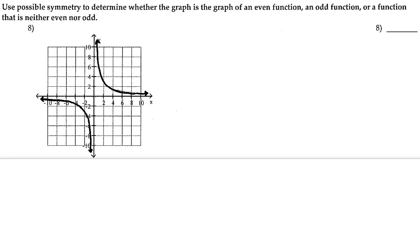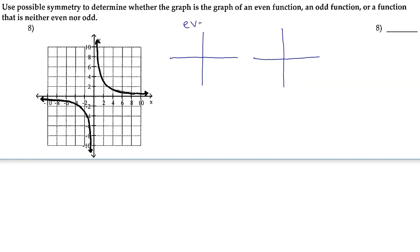So possible symmetry refers to the function reflected either across the y-axis or about the origin. So if we take a look at an even function, it's going to reflect across the y-axis.